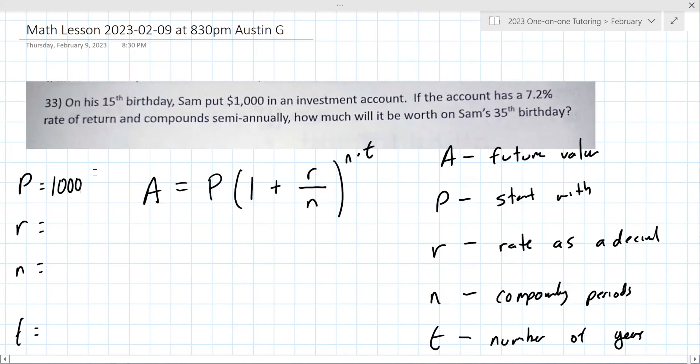So in this problem, it's worth writing them down. P would be 1,000. Good. And then r would be 0.072, not 7.2. It's a common mistake. N is the number of compounding periods, comes from semi-annually. So would that be half a year? Two times a year. And t, how many years? He's currently 15, asking about 35th birthday. So 20 years.